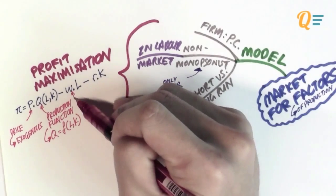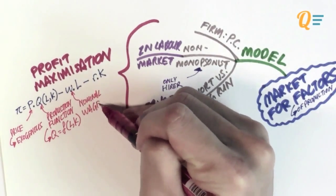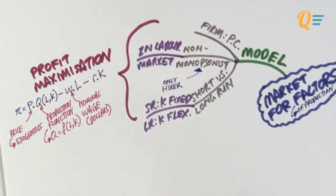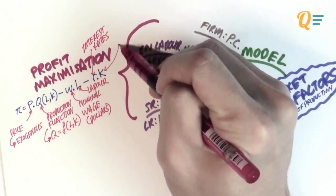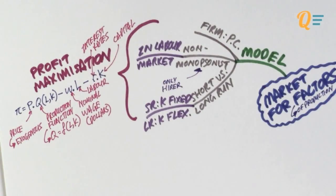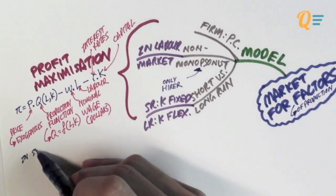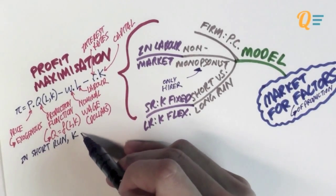W here refers to the nominal wage. When I say nominal, I'm talking about in dollar form. L here refers to the amount of labour, R is the interest rate, and K obviously refers to capital. So, now that we have explained the profit function, let's look at the short run.